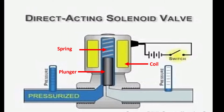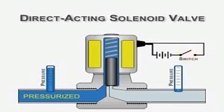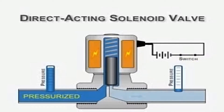Here we have a solenoid valve with a pressurized system on the upstream side and low pressure on the downstream side. There is a plunger in a vertical position in the middle, with a spring arrangement above it. The yellow component between the plunger is the coil, which is associated with the electrical power system. When the switch closes, the power supply energizes the coil.